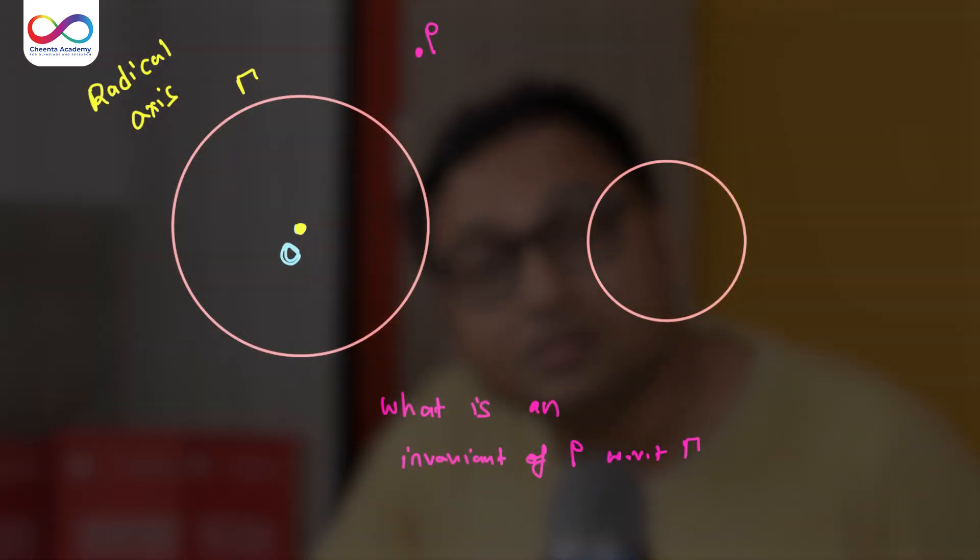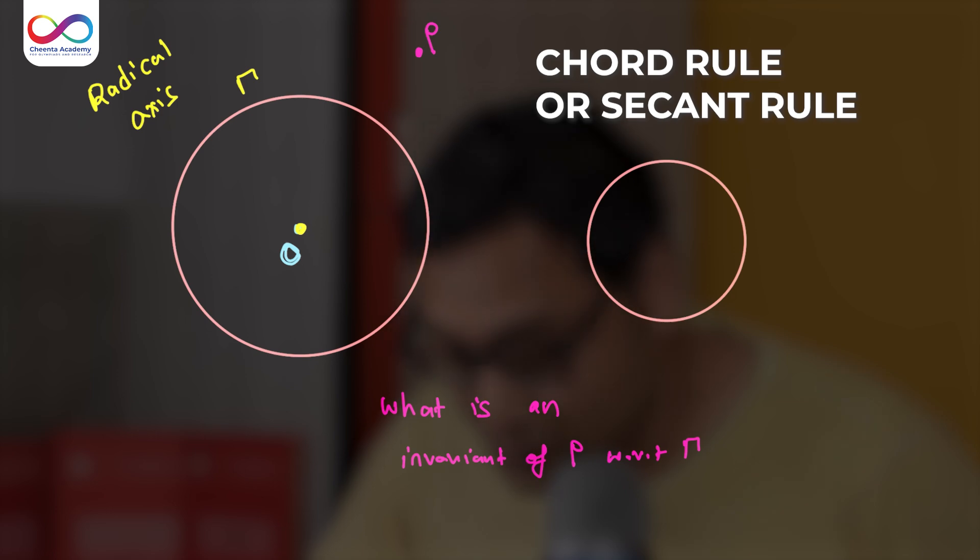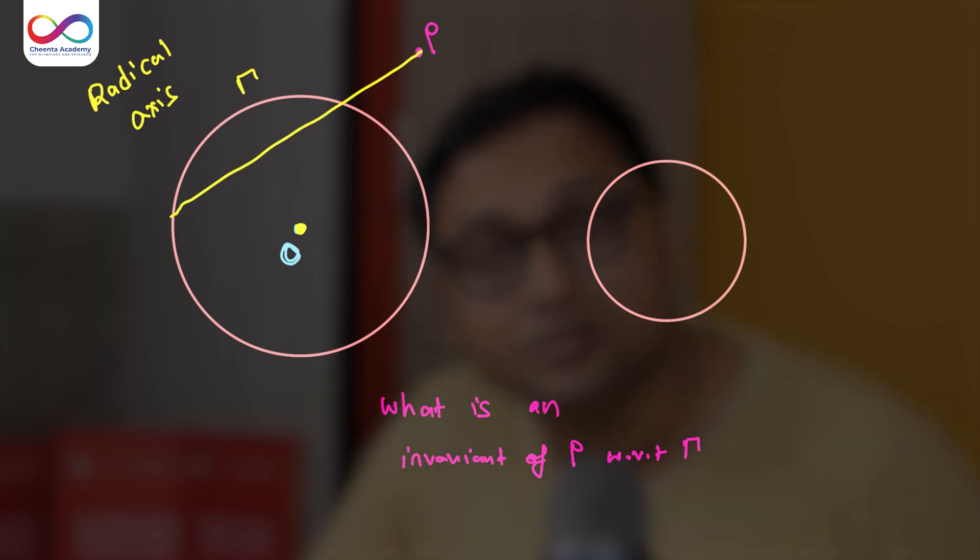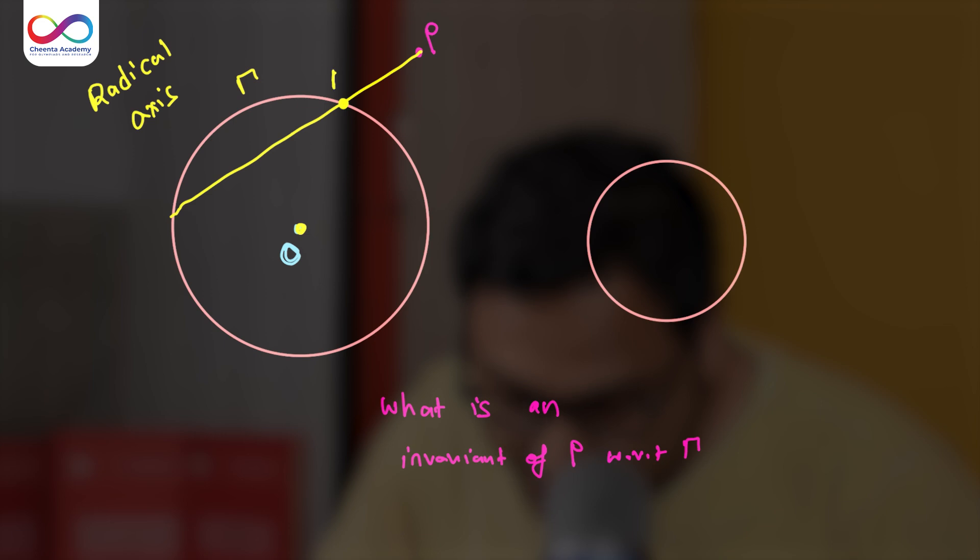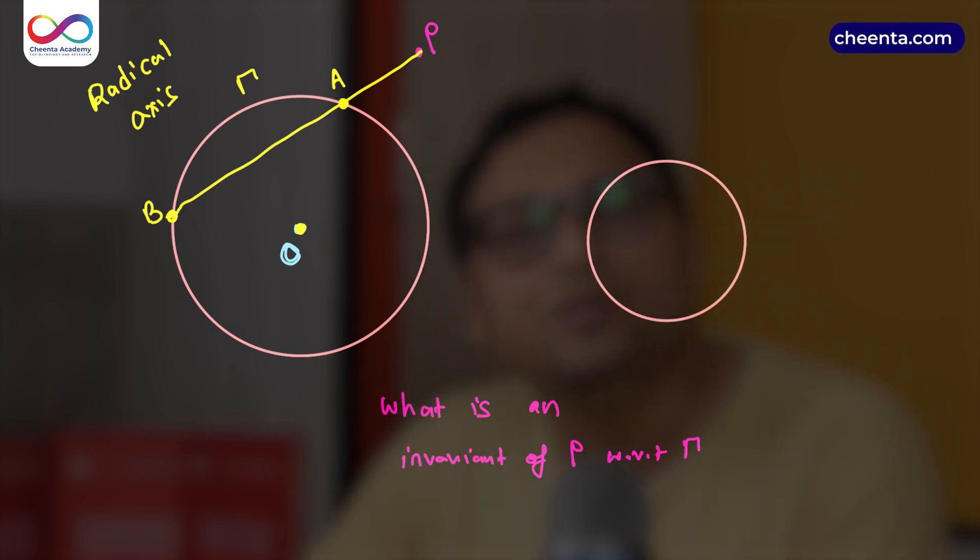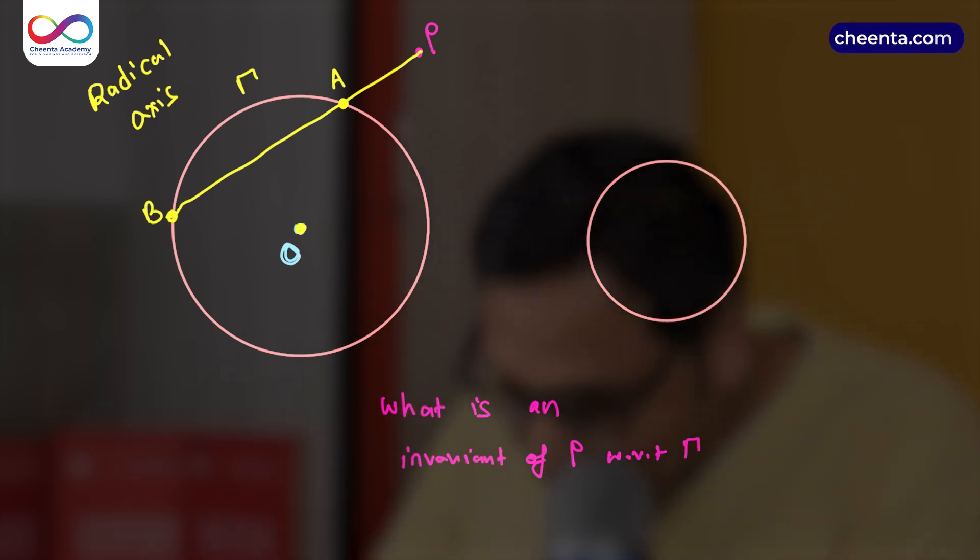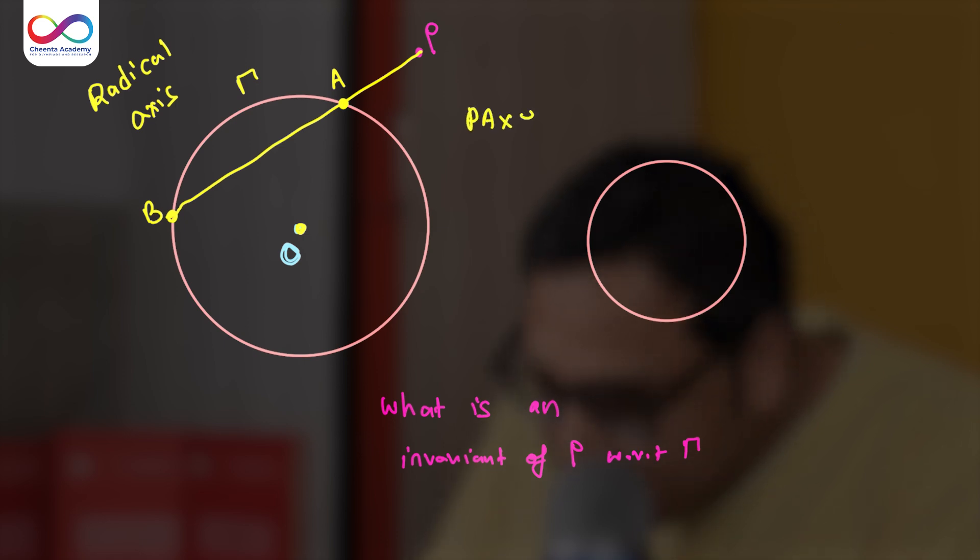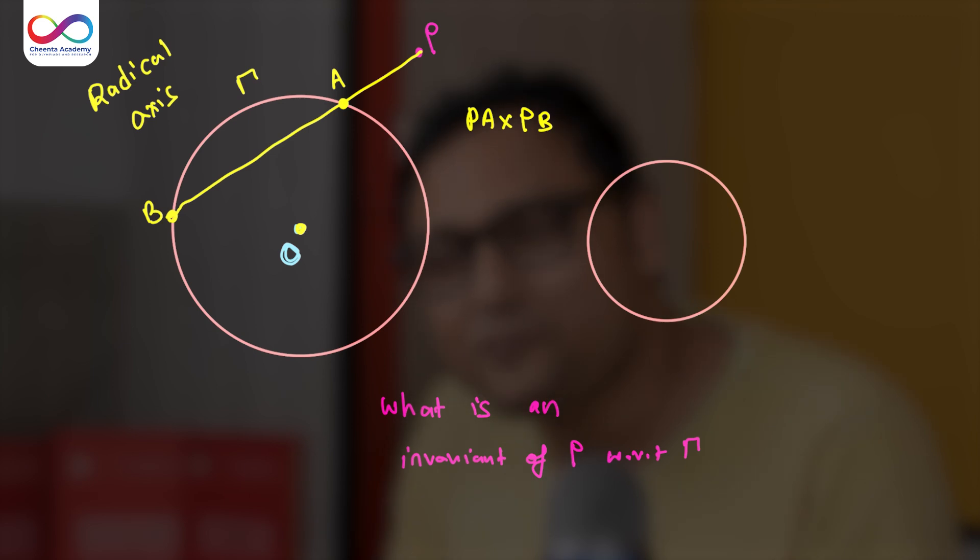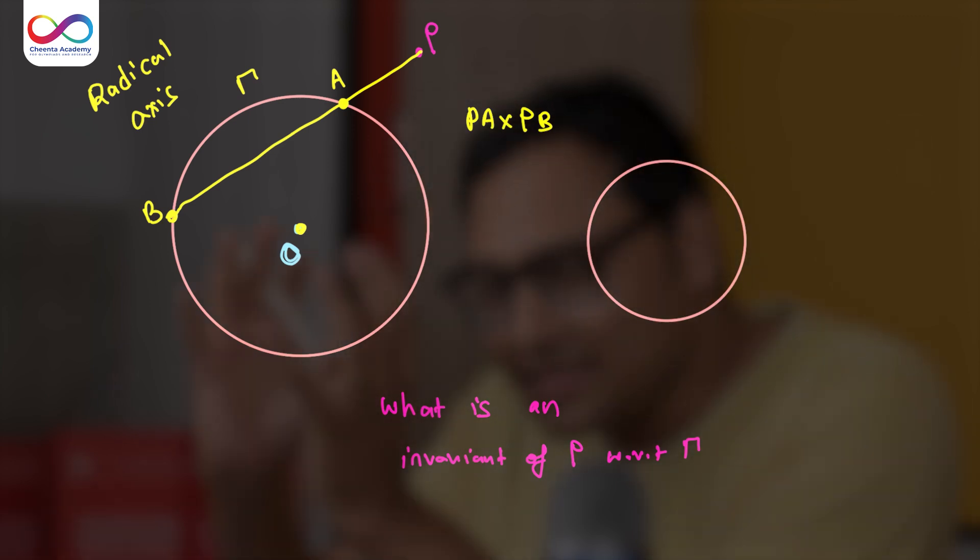So one very interesting invariant is sometimes known as the chord rule or the secant rule. What you do is you just draw a secant from the point P to the circle. Let's call this point A, let's call this B. Then the secant PAB has a very beautiful property: PA times PB is an invariant for the gamma circle and the point P.